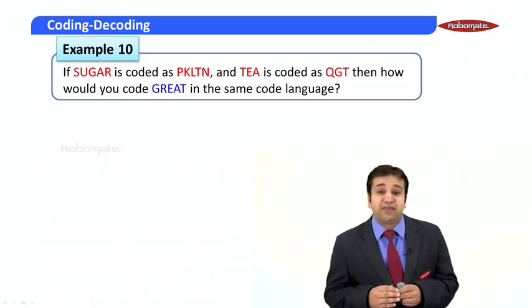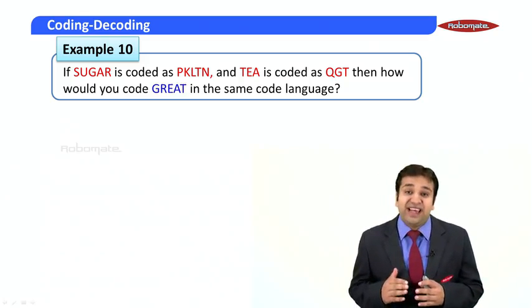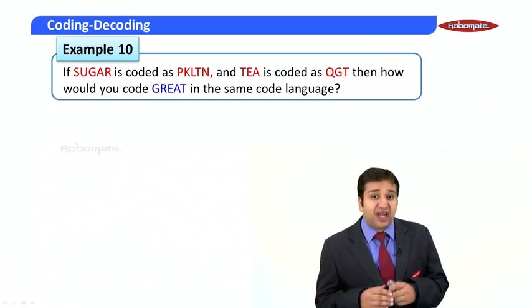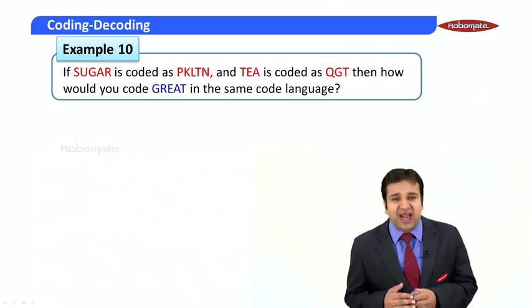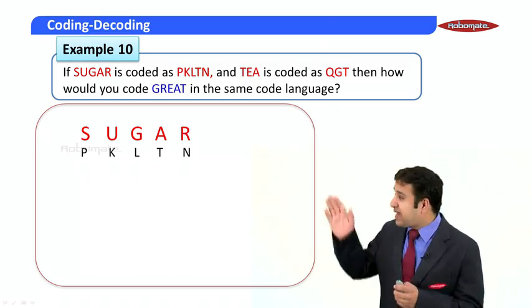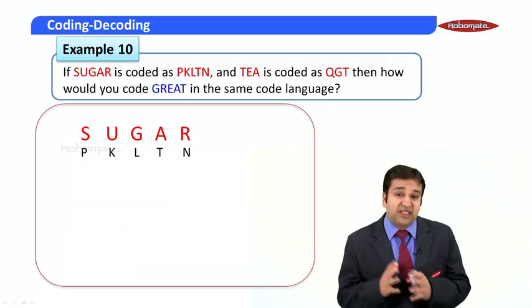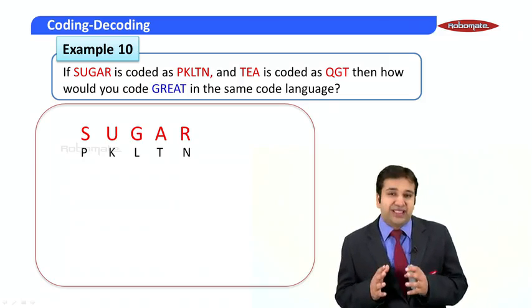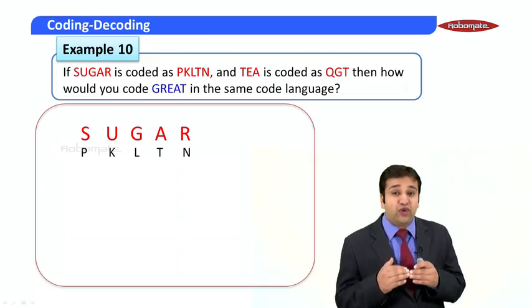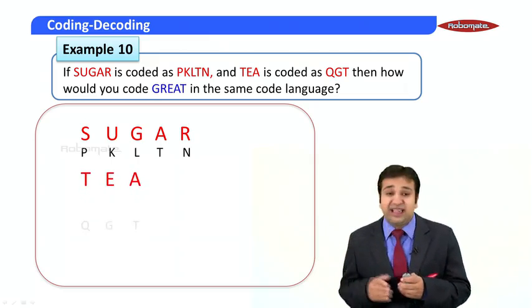Let us continue with this module of coding-decoding and see what this example says. It says that if 'sugar' is coded as 'pkltn' and 'at' is coded as 'qgt', then how would you code 'great' in the same code language? This is a very easy question. Sugar is given as pkltn, meaning s-u-g-a-r is coded as p-k-l-t-n. Till now we have been assuming the codes are in order: s corresponds to p, u to k, g to l, and so on.